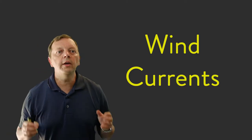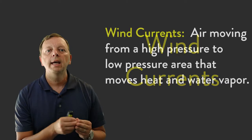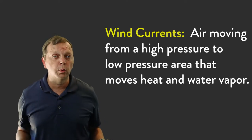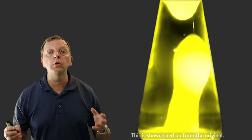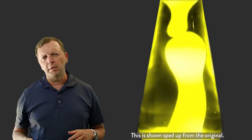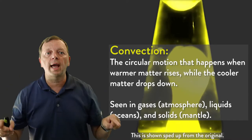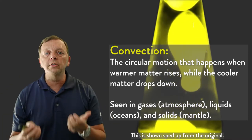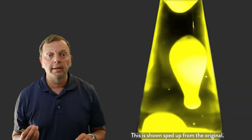Then there are wind currents. These are very important as they move heat and water vapor around the world. And what creates wind? Well, it's time to break out the lava lamp again, because we're going to talk about convection. Convection is that circular motion that happens when warmer air, liquid, or even rock rises while cooling material falls back to earth.